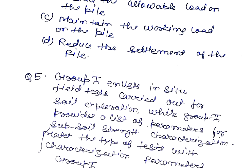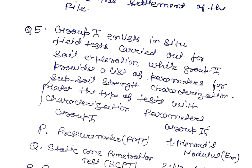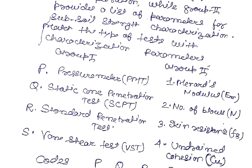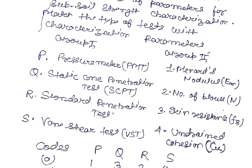Question number 5. Group 1 enlists in-situ field tests carried out for soil exploration while group 2 provides a list of parameters for sub-soil strength characterization. Match the types of test with characterization parameters. In group 1, P is pressuremeter, Q is static cone penetration test, R is standard penetration test, S is vane shear test.